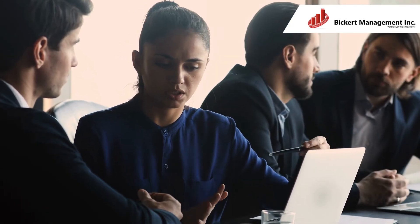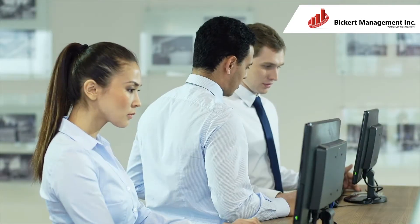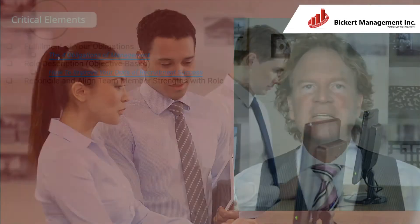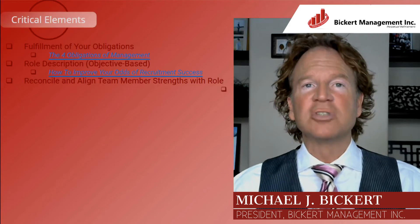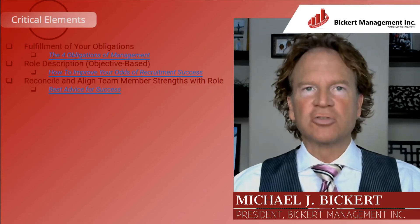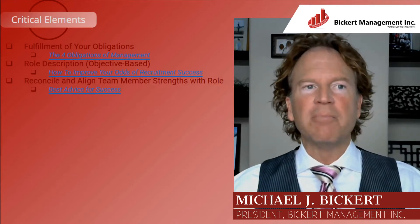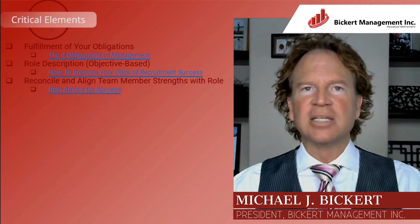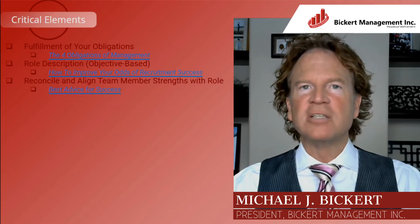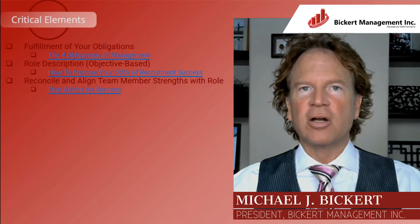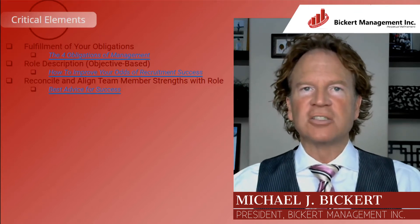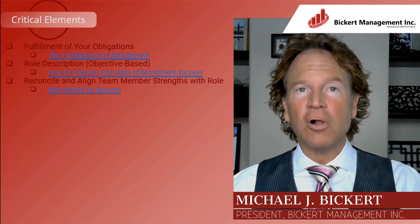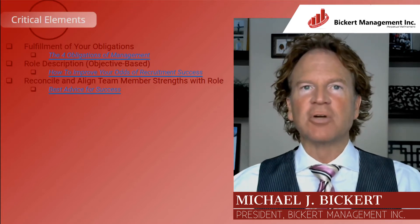Check out our video 'How to Improve Your Odds of Recruitment Success,' where we elaborate on the concept of an objective-based role description. The next critical element is to reconcile and align team member strengths with the role. It's critical for maximizing potential that people spend their time working on things they are good at — their strengths. That won't be 100% the case, of course, but aligning your people's role with their strengths and tasks with what they're good at is a really critical part of maximizing their potential.